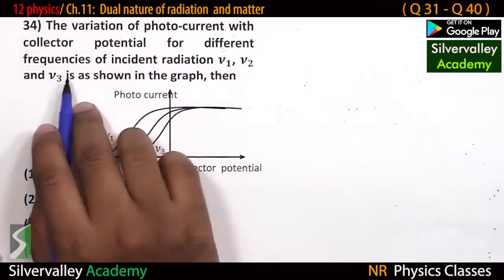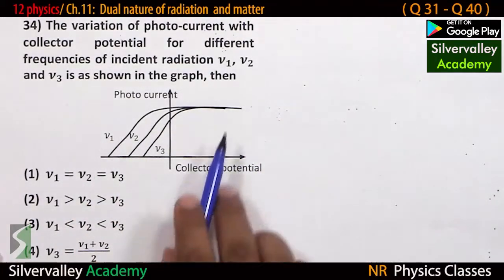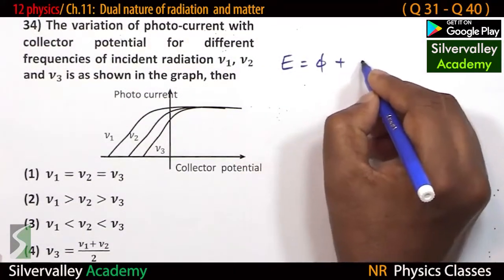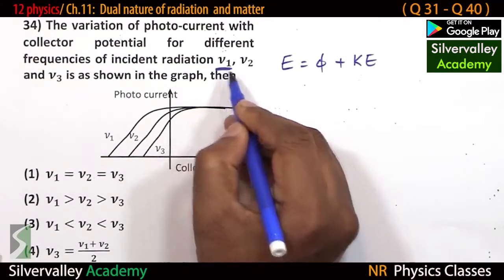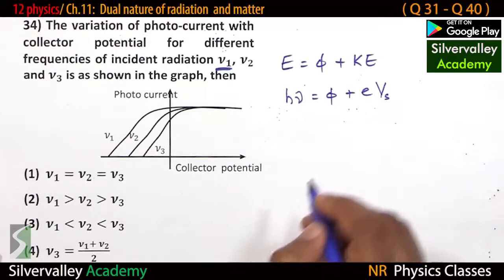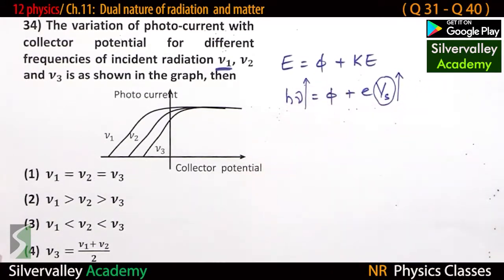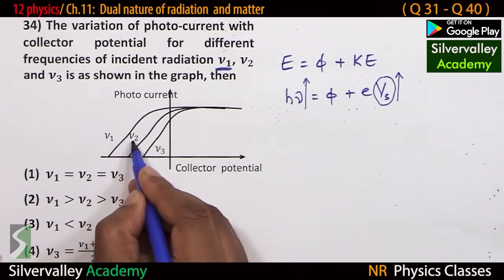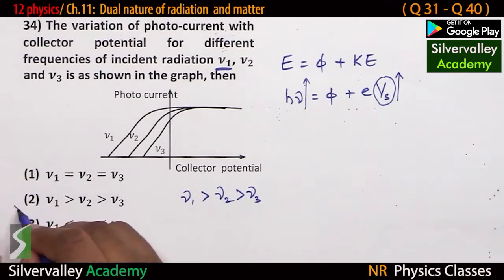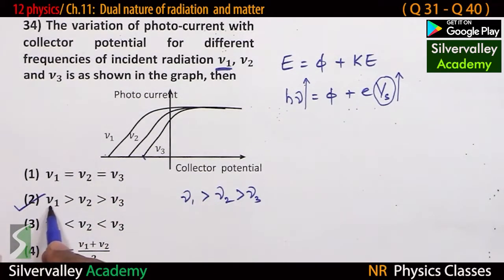The variation of photoelectric current with collector potential for different frequencies of incident radiation ν₁, ν₂, ν₃ is shown. Using h*nu = phi + e times stopping potential: if stopping potential is more, then frequency should be more. So ν₁ should be greater than ν₂ should be greater than ν₃, because the stopping potential of ν₁ is greater than ν₂ which is greater than ν₃.